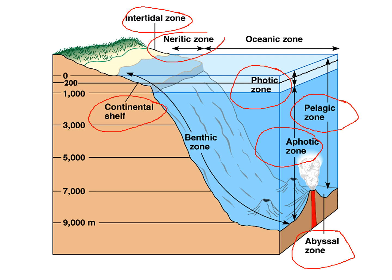There is the neritic zone, which is very near to the coast, and the open ocean zone — also called the oceanic zone — which is home to thousands of zooplanktons and phytoplanktons that make up the basis of all marine food chains. The benthic zone is the ocean floor, consisting of organisms that are crawlers or bottom dwellers. All of these organisms exist in harmony, and there is also a hydrothermal vent where chemosynthetic bacteria can survive.